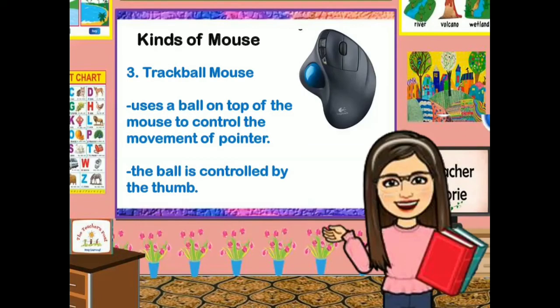The third one is the trackball mouse. It uses a ball on top of the mouse to control the movement of the pointer. The ball is controlled by the thumb.